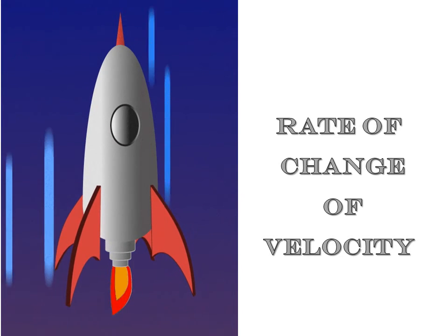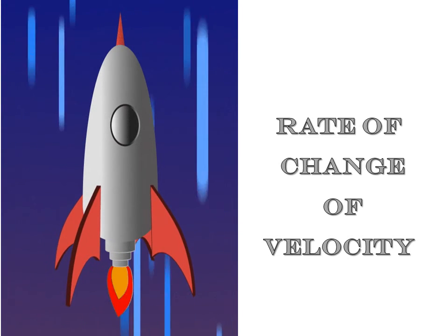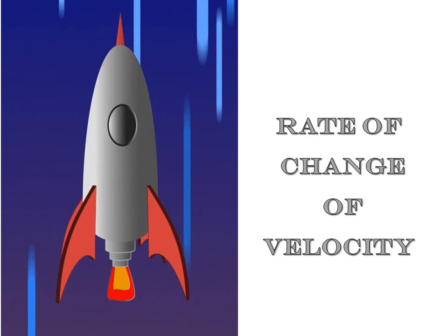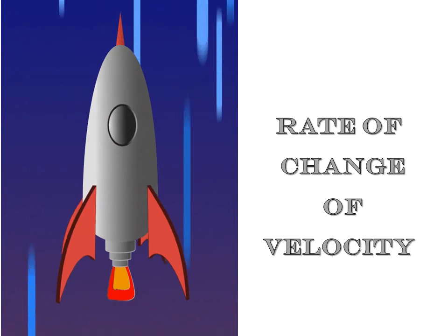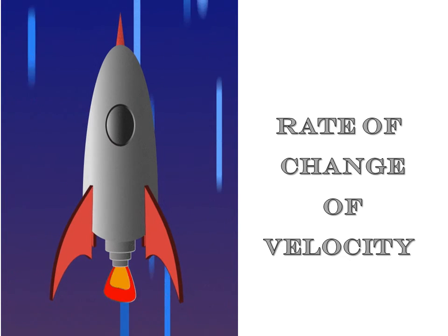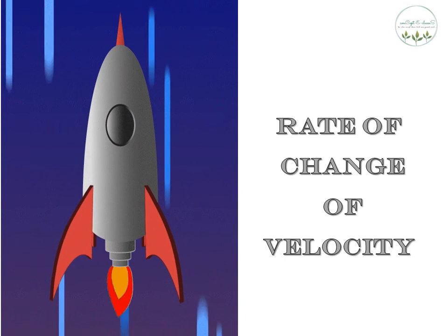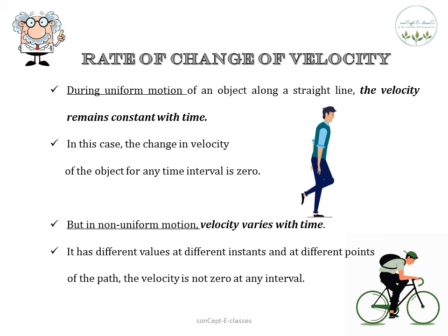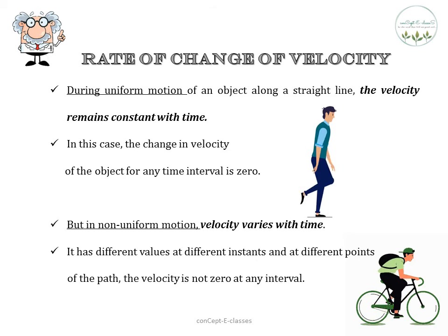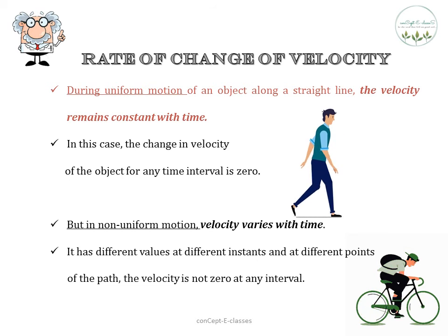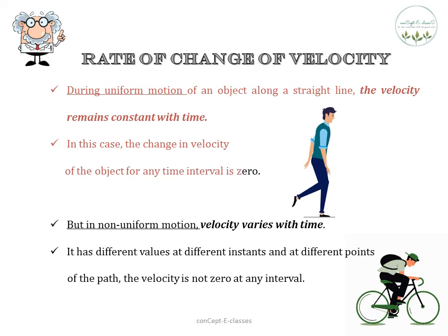Now let us see the rate of change of velocity. When distance is divided by time, we get speed. When displacement is divided by time, we get velocity. Now what happens when the velocity changes? In the case of uniform motion of an object along a straight line, the velocity remains constant with time. During uniform motion, the change in velocity of an object for any time interval is zero.